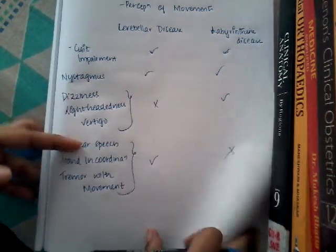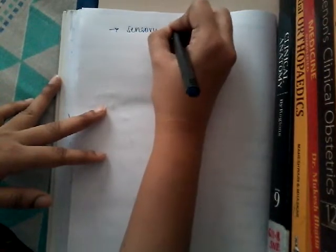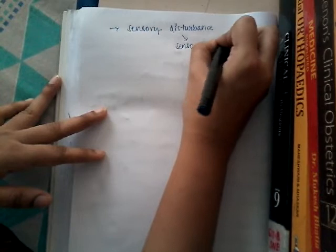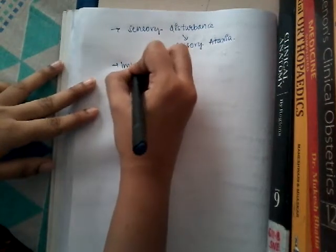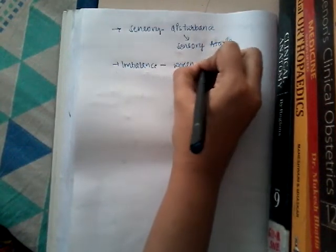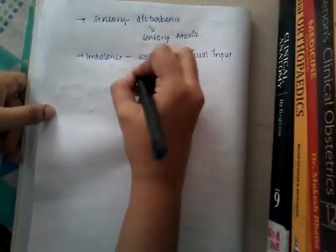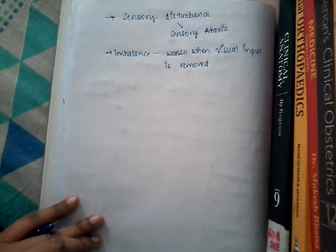Sometimes cerebellar ataxia is also associated with sensory disturbances, which is called sensory ataxia. The imbalance — that is gait imbalance — will worsen when visual input is removed, such as when the patient closes their eyes. Sometimes even weakness of the proximal leg muscles can mimic cerebellar disease.